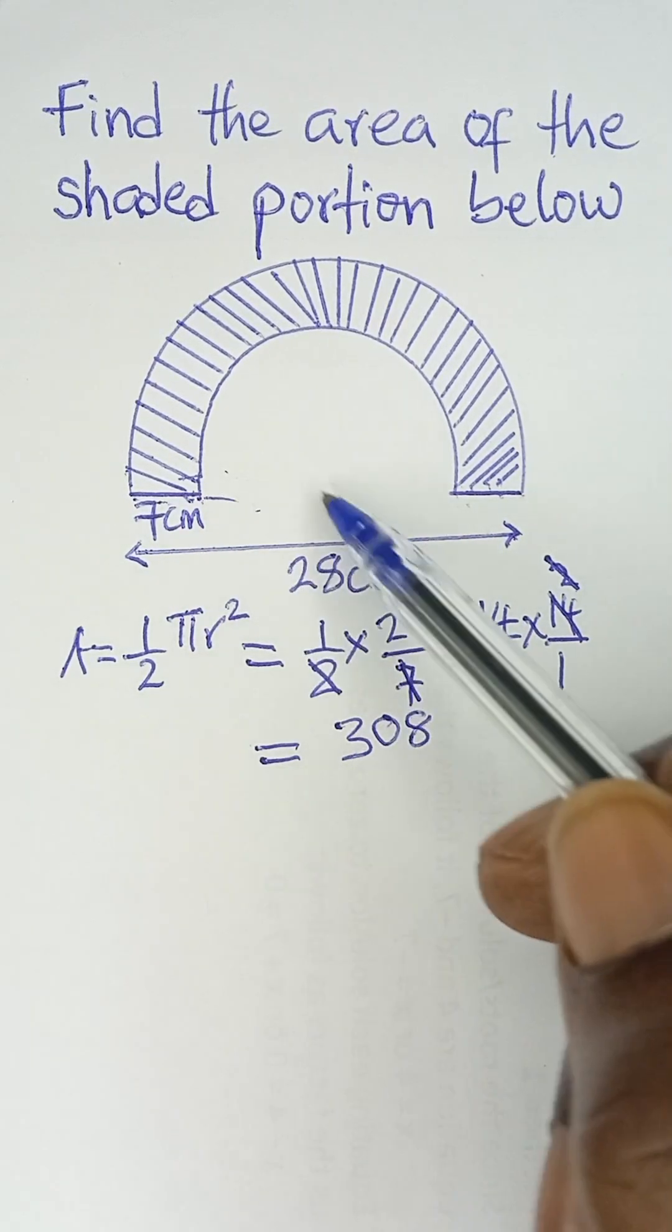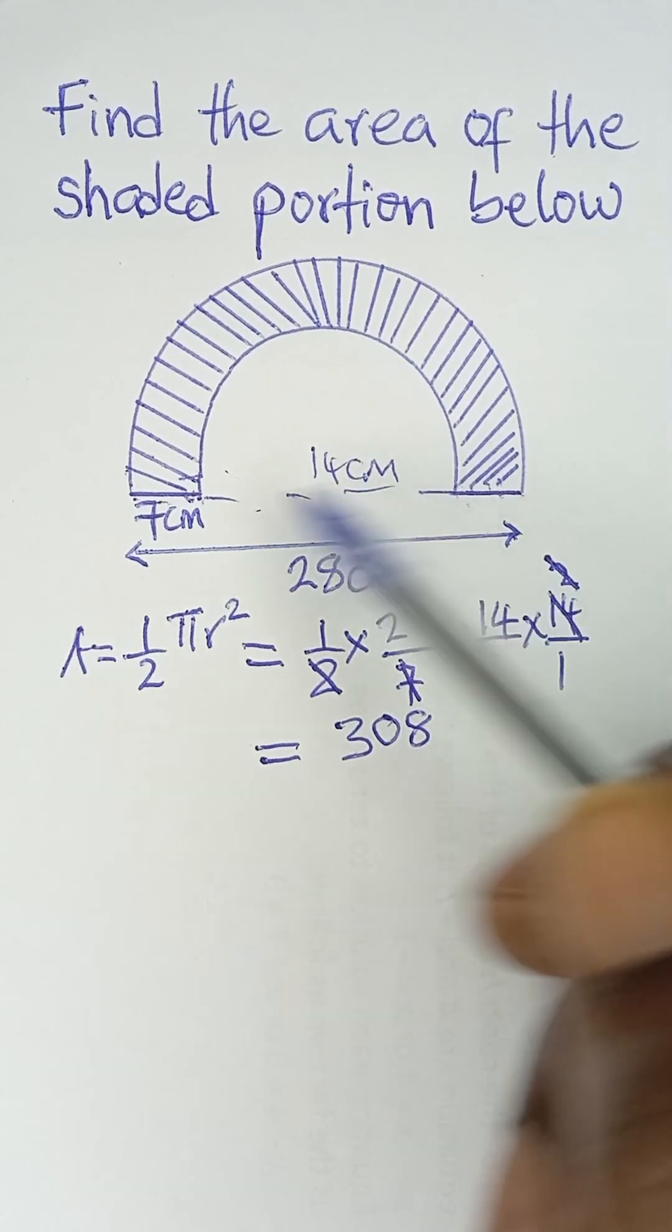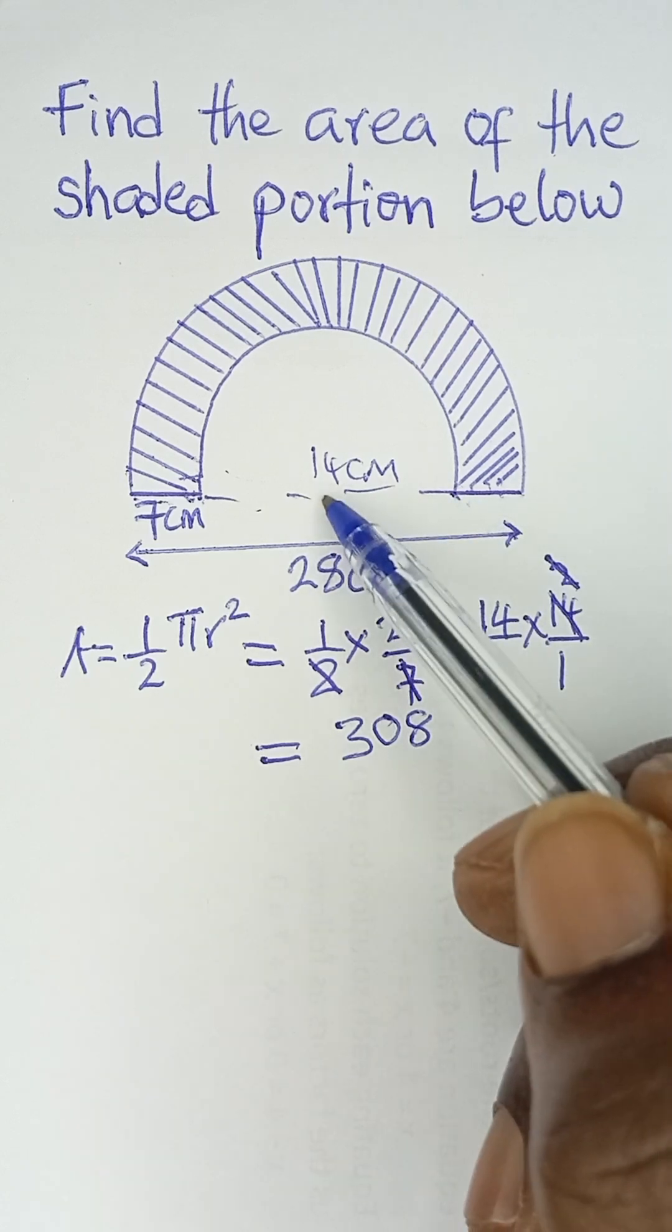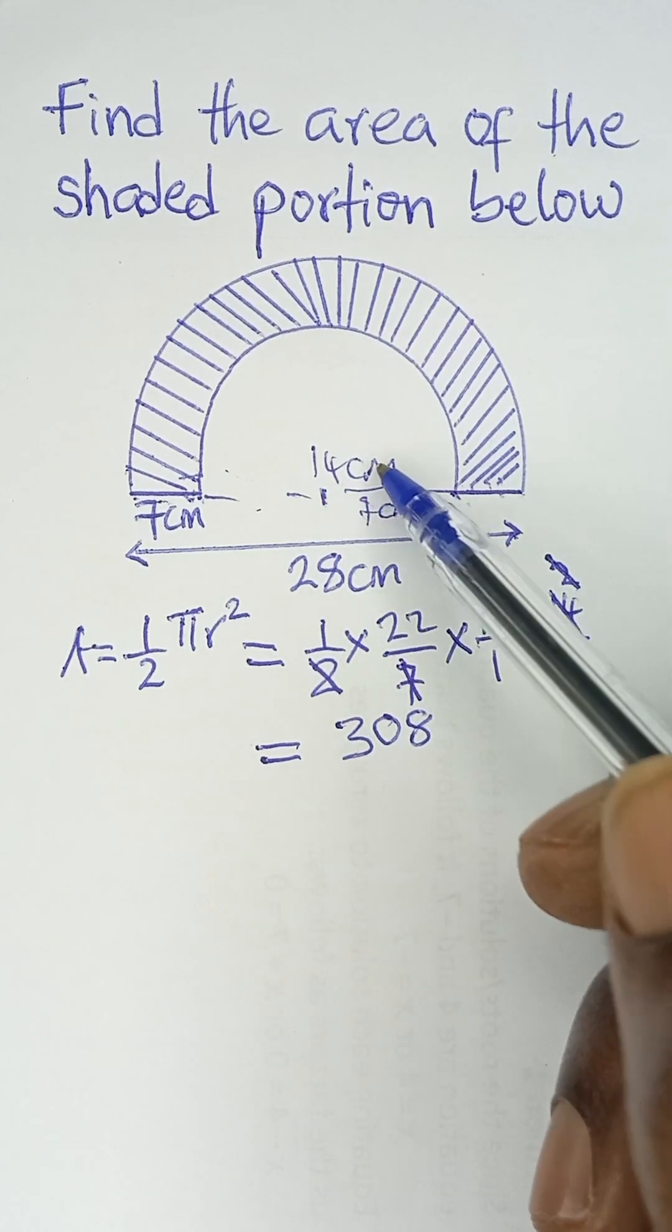So it means this part now is 14, 14 centimeters. That is the diameter of this place. So the radius of this portion will now be 7. That is 14 divided by 2 is 7.